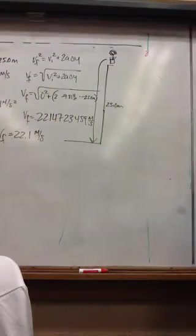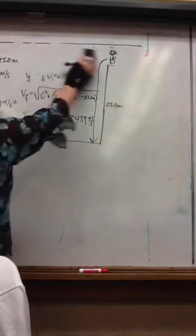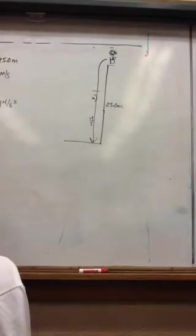Okay. Now, that's part A. Let's look at part B. How much time does a passerby on the sidewalk below have to move out of the way before the flowerpot hits the ground? So, let's get rid of all of this, and now we're looking at those four. So, VI, delta Y, A, and delta T.